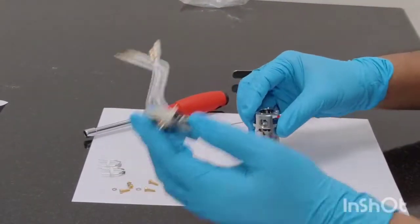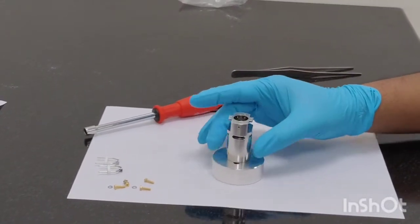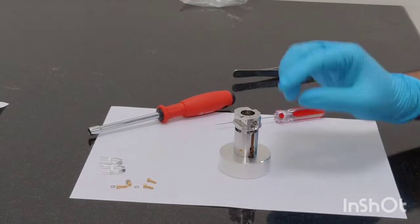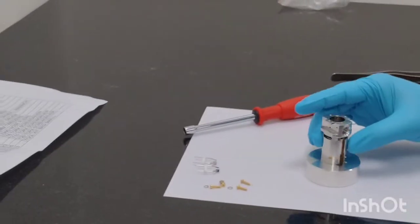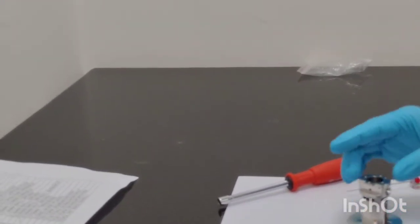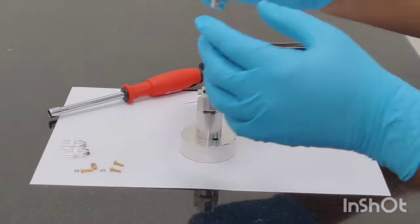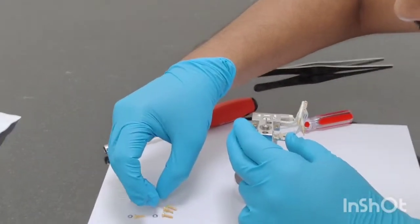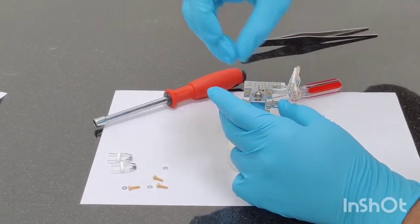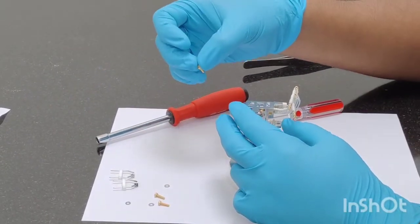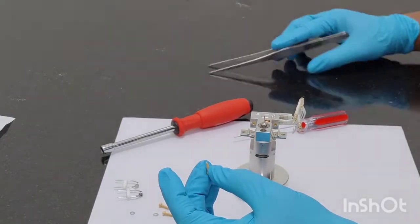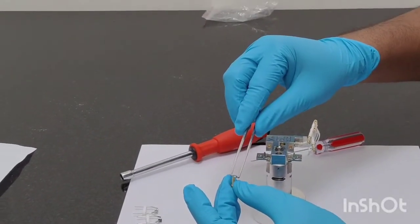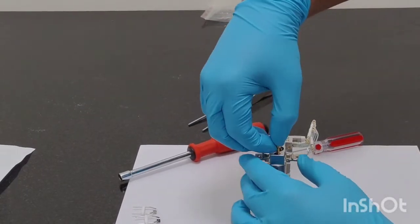Now you place this ion source body like this. This portion is going to face the right side, so that these portions which are there, this is your extended lens connector, these are your ion focus and entrance lens connections, they should be lying in the right hand side. And then we will be placing this heater like this. We will use two screws.